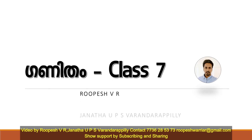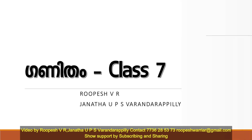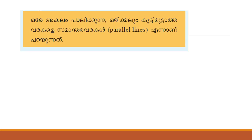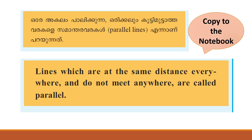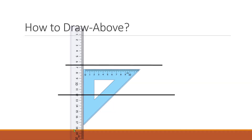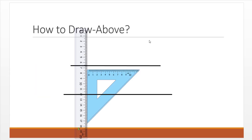Hello friends, and welcome to the seventh standard mathematics class. In the last class we learned about parallel lines and came across their definition. Parallel lines are the lines which are at the same distance everywhere and do not meet anywhere. We looked at what same distance everywhere means.